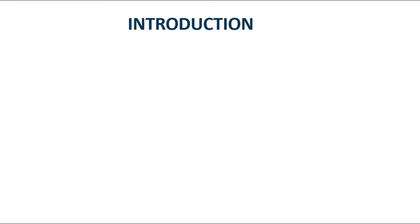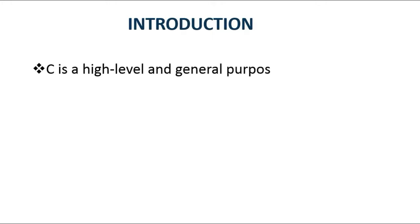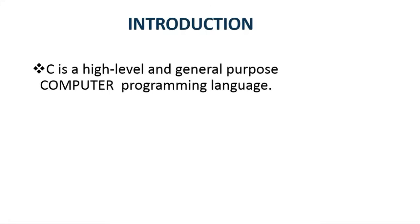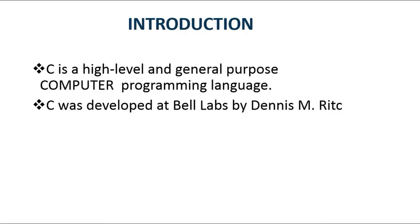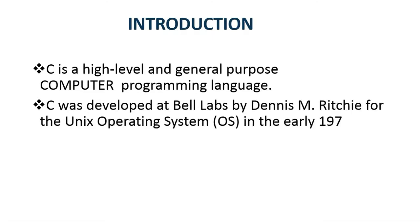C programming is a high-level, general purpose computer programming language. It was developed at Bell Labs by Dennis M. Ritchie in the year 1970 for the Unix operating system.